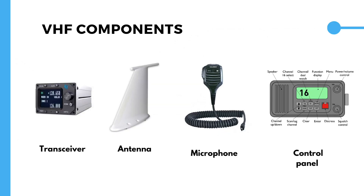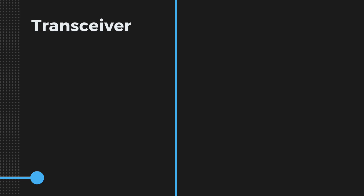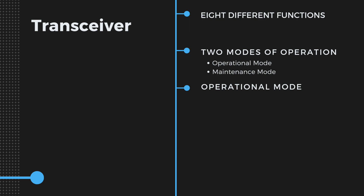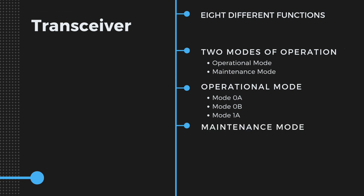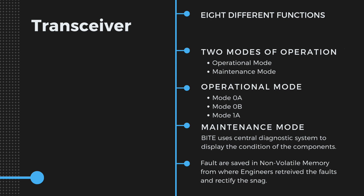The equipment required for this communication includes a transceiver, antenna, microphone, control panel, and a speaker. The transceiver is where most of the action occurs. This device has eight separate functions to perform and two modes of operation: operation mode and maintenance mode. The operation mode has selections of Mode 0 Alpha, Mode 0 Bravo, and Mode 1 Alpha, which adjust the sensitivity and selectivity of the radio. In maintenance mode, built-in test equipment uses the central diagnostic system to give the condition of the component and saves faults in the non-volatile memory.